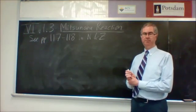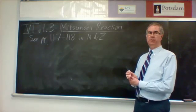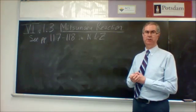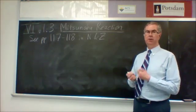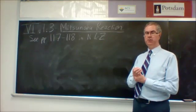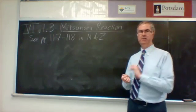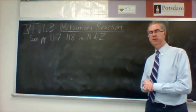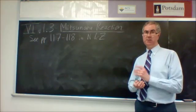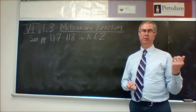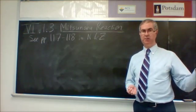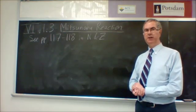This is a useful way of doing SN2-type reactions on an alcohol. You use an azo-dicarboxylate as an agent to activate an alcohol to allow you then to do SN2-type processes on that alcohol.